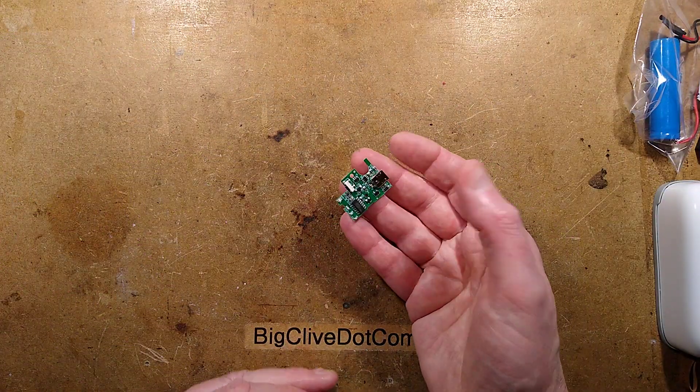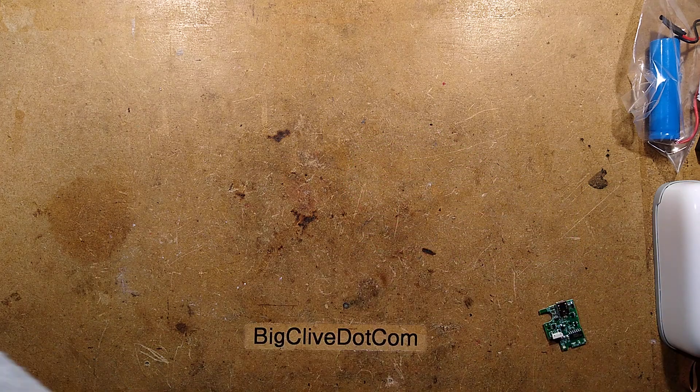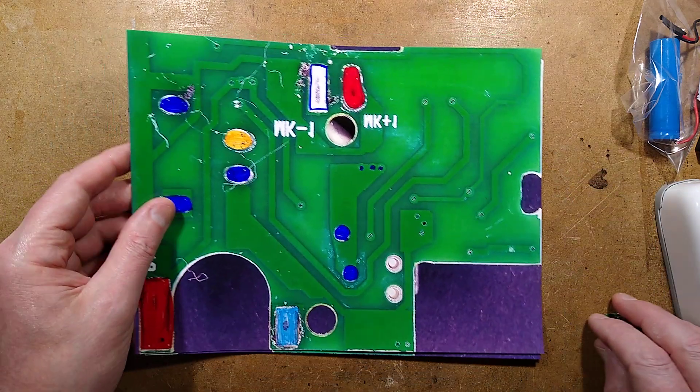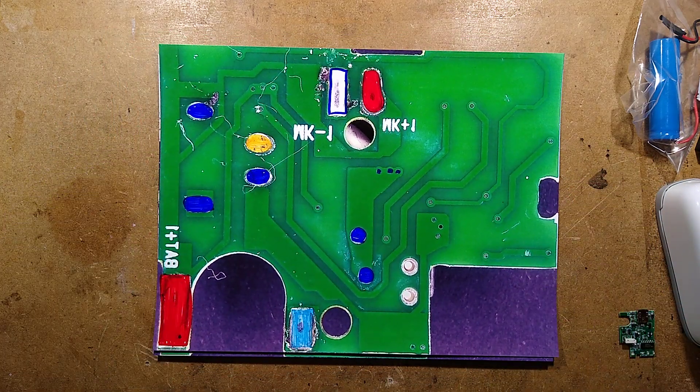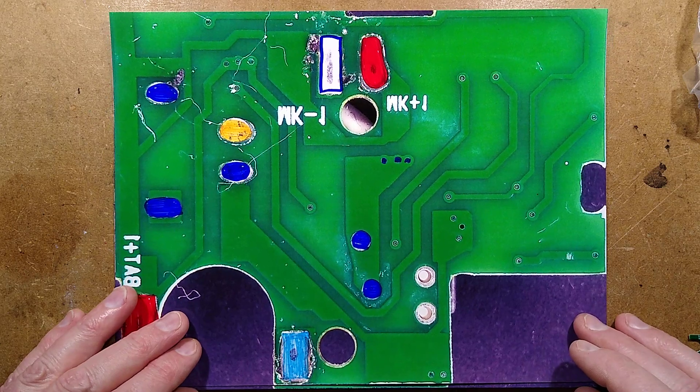But anyway, let's get this stuff out of the way because I've already had the circuit board out. We can cut straight to the chase here. So the circuit board is out. Let's zoom down this, this is the back of the circuit board. I shall zoom in just a little bit.